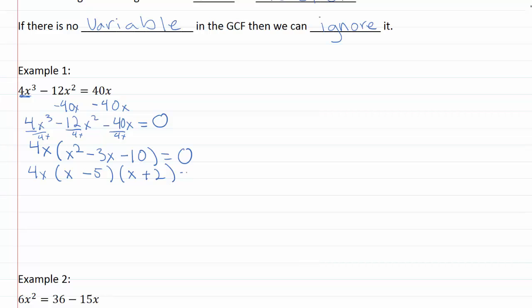Cool. So now I have three different factors multiplied together give me zero. So I'm going to have three possible solutions. Each factor set equal to zero is going to give me one of my solutions.